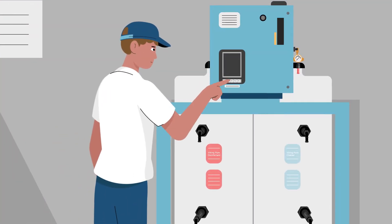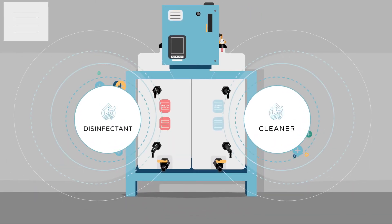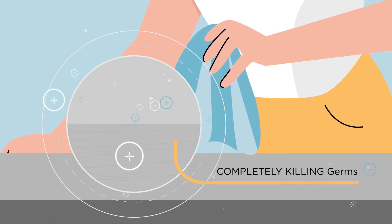We start by installing our electrolyzed water generator in your facility. This produces two solutions, a cleaner and an EPA-approved disinfectant. They're all natural, completely killing germs, bacteria, and viruses.